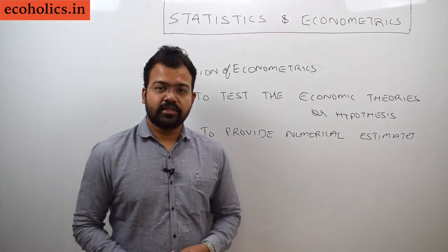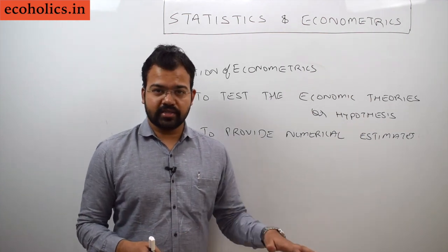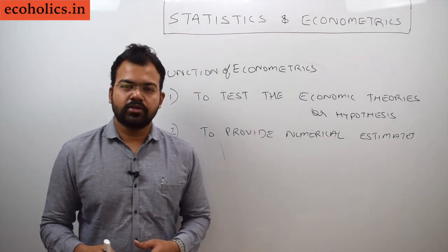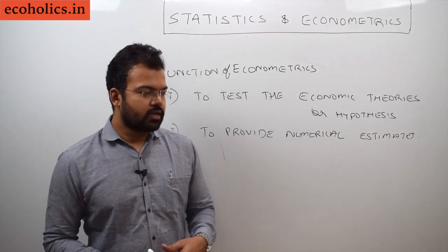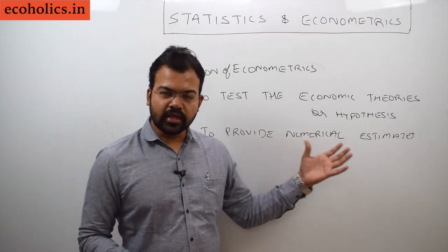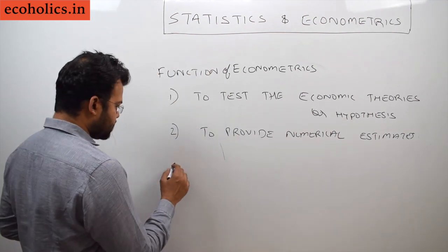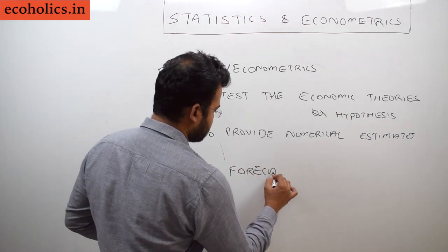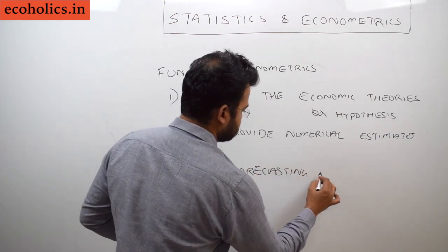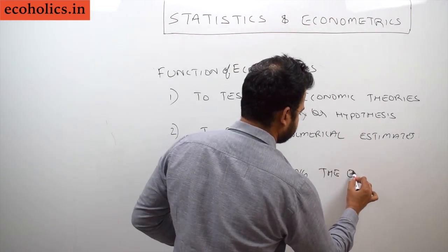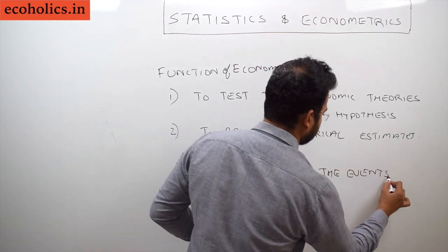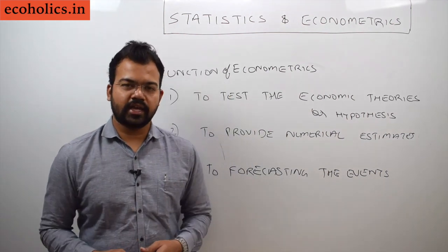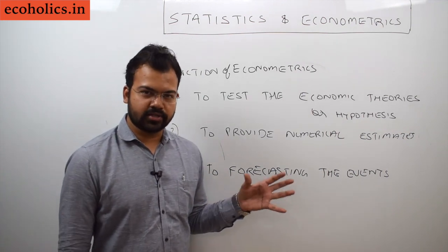For example, suppose a government cuts direct taxes — what will be the impact of cutting those taxes on consumption and income level in the economy? This is how you can estimate the coefficient. The third function is forecasting events in the real world. These are the three functions of econometrics that we need to take into consideration when dealing with this subject matter.